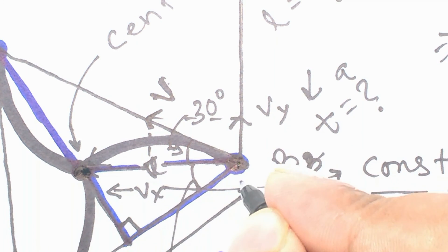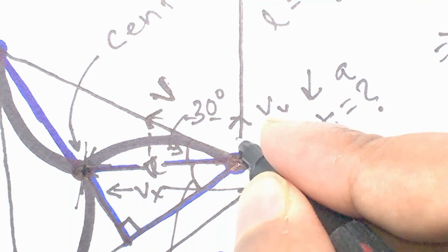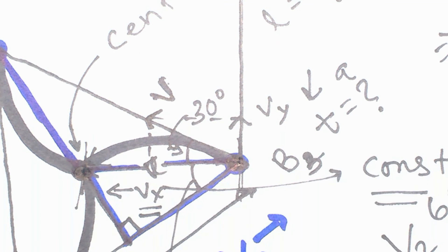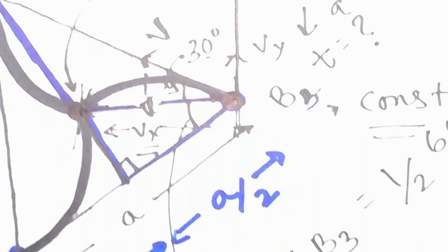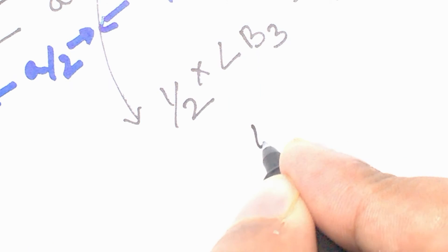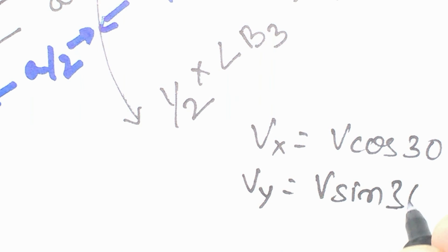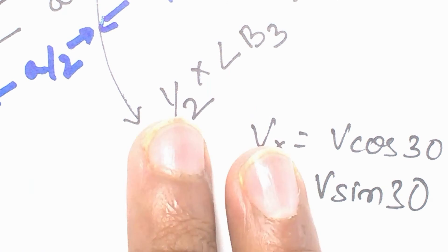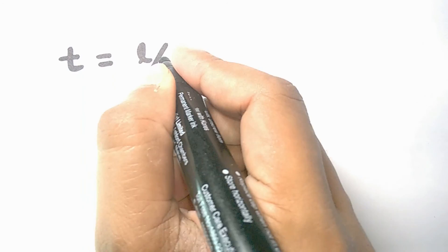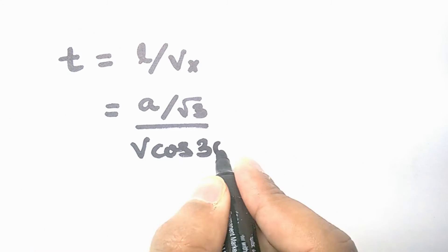Now what we have to do is just calculate the time the body is going to take to move the particular distance—that is distance from the third vertex to the centroid of the triangle—with a constant velocity, which happened to be the horizontal velocity, which is the ratio of the distance to the velocity.